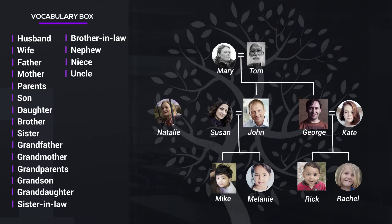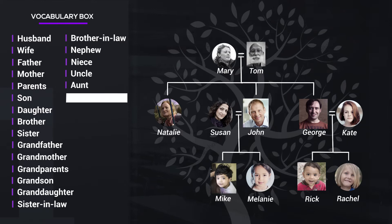This is Natalie. Natalie is John and George's sister. Natalie is Rick's, Rachel's, Mike's, and Melanie's aunt. Rick and Rachel are Mike and Melanie's cousins.